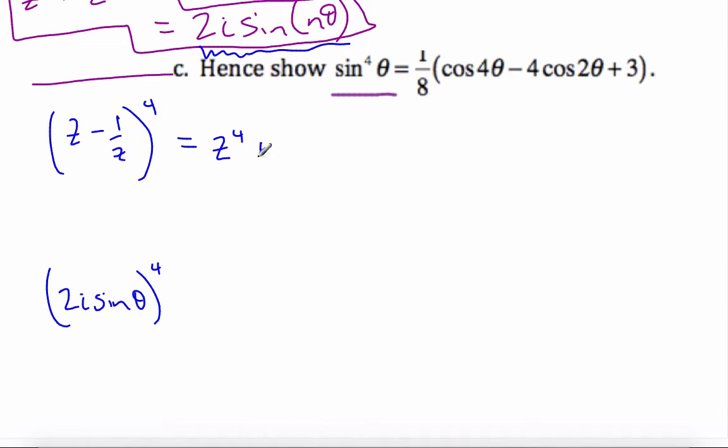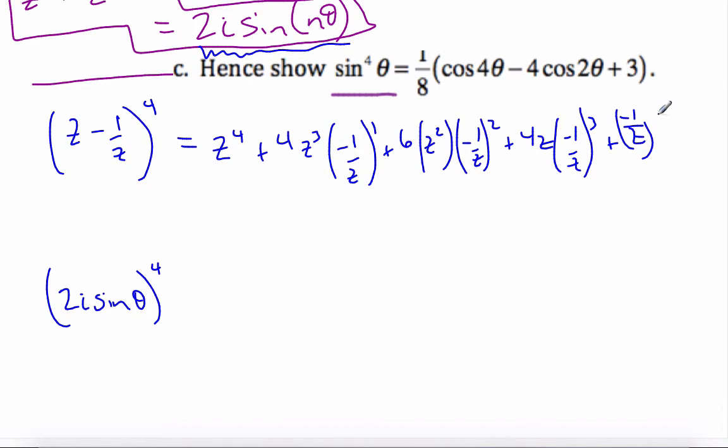z to the power of 4 plus 4 z cubed times minus 1 over z, this is 1, plus 6 z squared times minus 1 over z squared, plus 4 z times minus 1 over z cubed, plus minus 1 over z to the 4th. So these coefficients, I just know them off by memory, but you can get them quickly on Pascal's triangle or using your calculator.